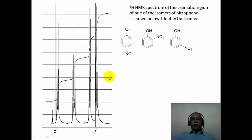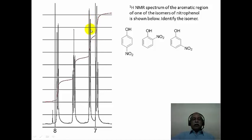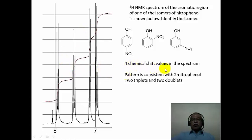However, what one has to do to distinguish between these 2 isomers is to look at the pattern of the spectrum. There is a doublet kind of multiplet in this region, a triplet multiplet in this region, another doublet multiplet in this region, and finally another triplet. In other words, the spectrum consists of 2 doublets with ortho coupling of roughly 7 to 8 hertz, and 2 triplets also with ortho coupling. The pattern is consistent only with ortho-nitrophenol, giving 2 triplets and 2 doublets.